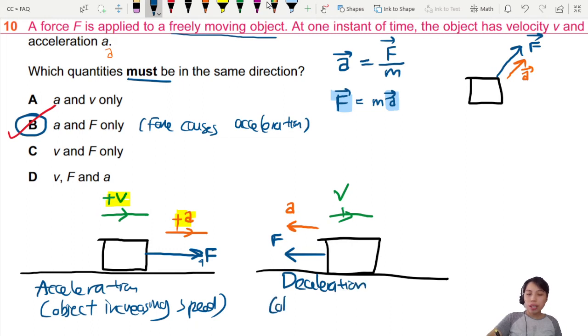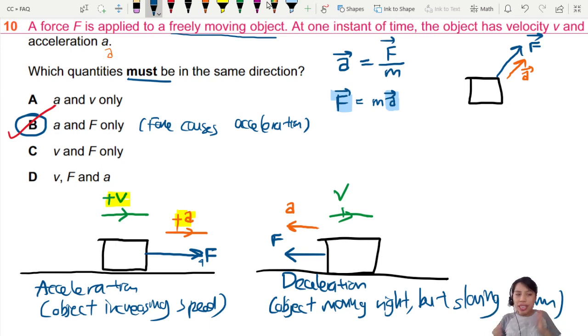In other words, this is what we call deceleration, which means the object is moving still to the right but slowing down. So you see here, v is not in the same direction as a. In fact, velocity and acceleration can be in any direction.